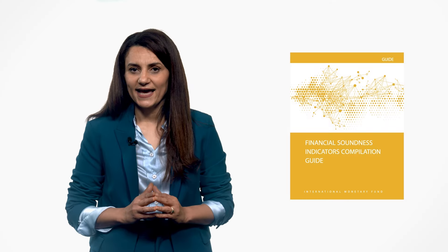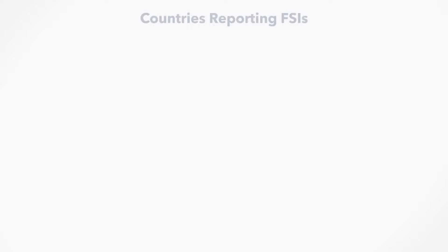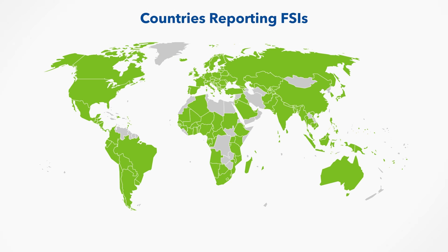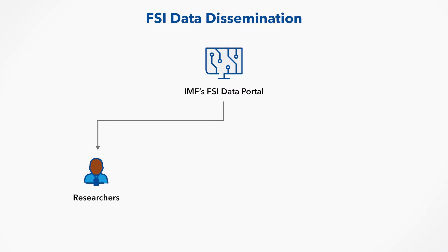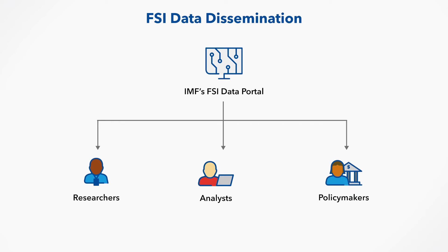The 2019 FSI guide is the ultimate authority on FSI concepts and methods. Currently, more than 140 countries compile and report the FSIs to the IMF on a regular basis. The FSIs are also extensively used by the IMF in financial stability and surveillance analysis. FSI data are disseminated in the IMF's FSI data portal and are widely used by researchers, analysts and policy makers around the world. The FSIs database was enhanced in 2022 to reflect the adoption of the 2019 FSI guide.